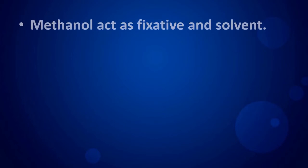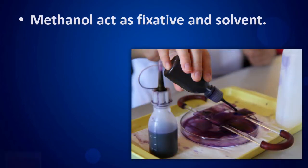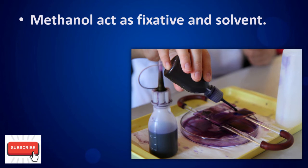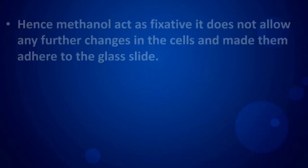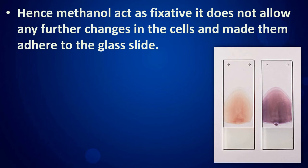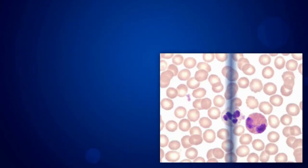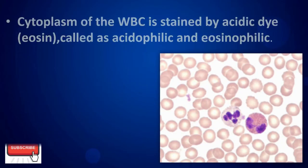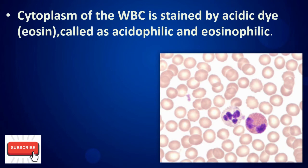Methanol acts as a fixative and solvent. As a fixative, it does not allow any further changes in the cells and makes them adhere to the glass slide. The cytoplasm of the WBC is stained by the acidic dye eosin.